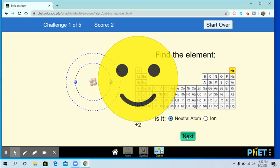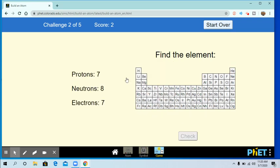Similarly I want to go to the next. Here it is telling that proton is seven, neutron is eight, and electron is seven. Seven, seven means it will be nitrogen.